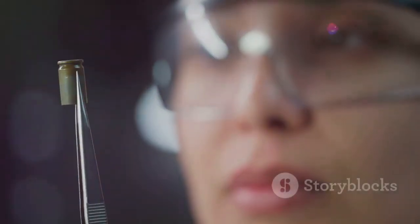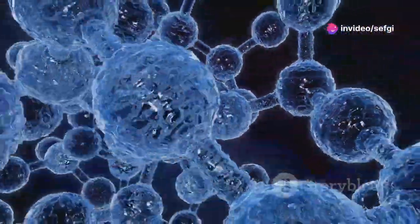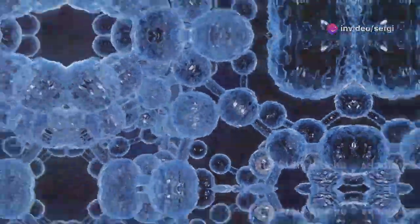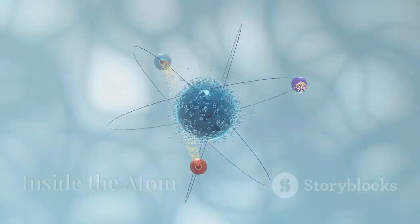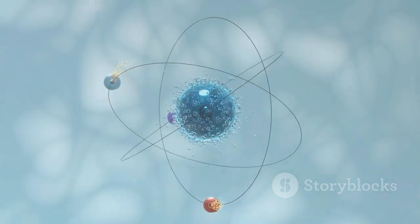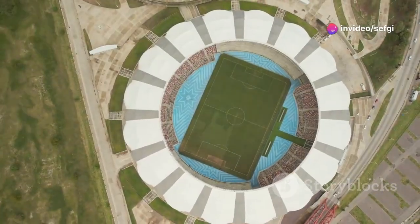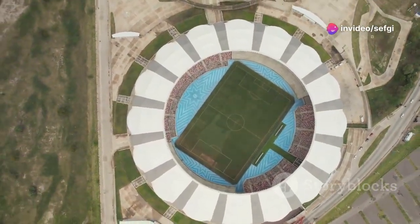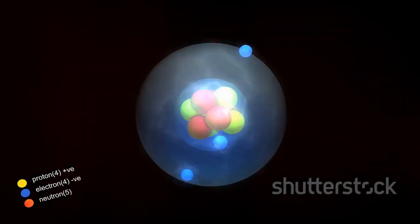We measure atoms using a unit called the angstrom. One angstrom is one ten billionth of a meter. That's mind-bogglingly tiny. The atom's core, the nucleus, is about 100,000 times smaller than the atom itself. If the atom were a football stadium, the nucleus would be like a marble sitting on the 50-yard line. Despite its tiny size, the nucleus contains almost all of the atom's mass.